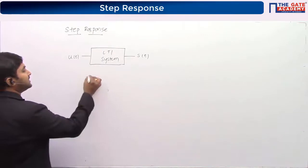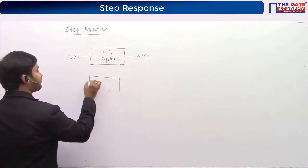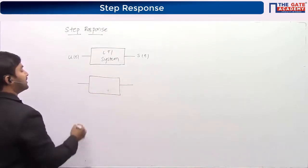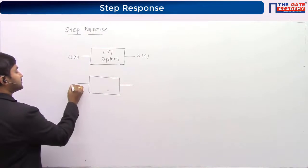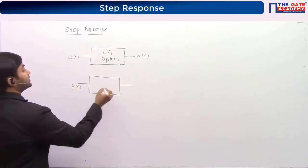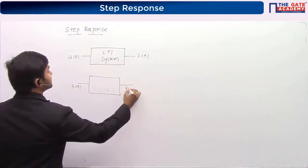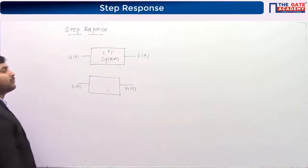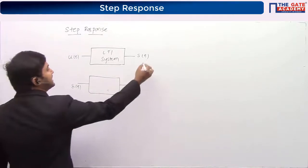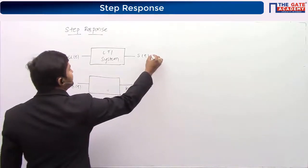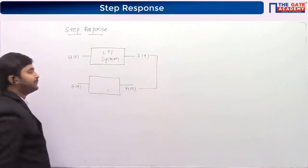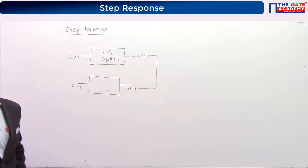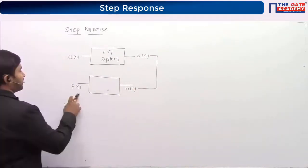What we have already seen is the impulse response — it means if you apply δ(t), the response of the system is h(t). Now what is important from an examination point of view is the relation between s(t) and h(t).